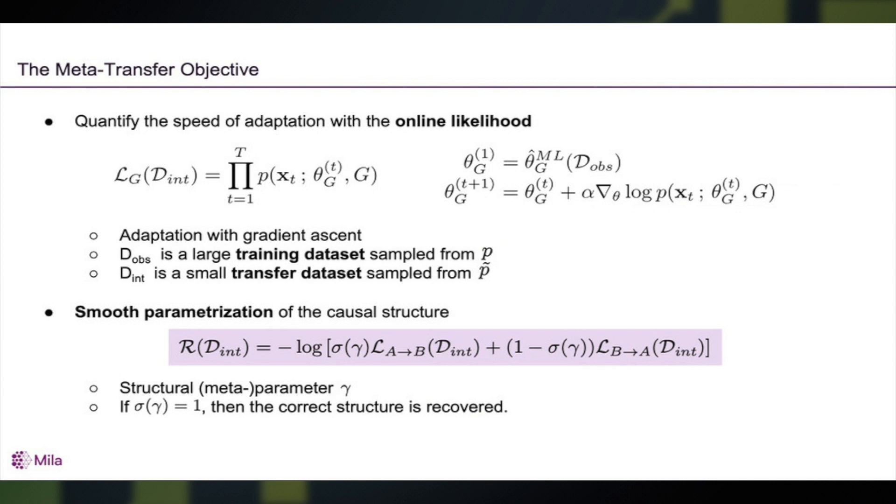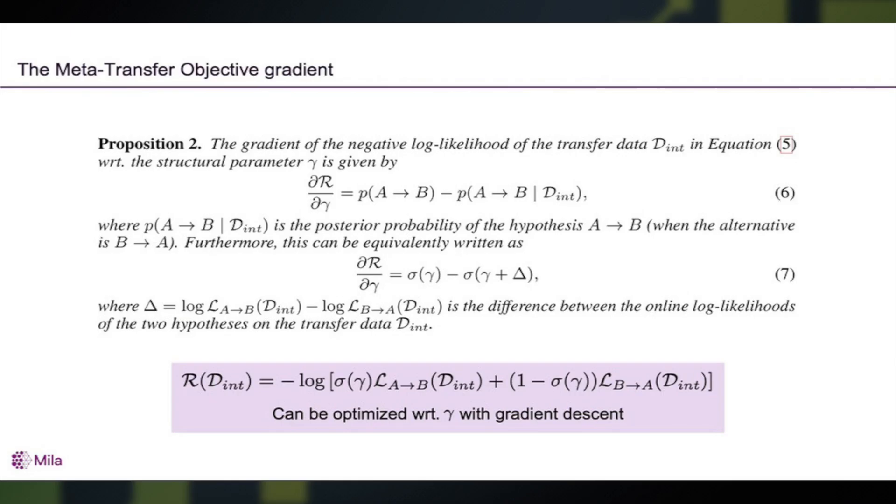So this meta-learning objective we can do gradient descent on after each episode where we see a change in distribution. So we learn this gamma and sigmoid of gamma is the probability that A is the cause of B. We also have a theorem that tells us how to compute the gradient of that meta-objective efficiently by looking at the difference in log likelihoods of the two hypothetical models.